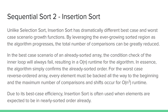For the worst case, when all of the elements are in reverse order, every element must be backed up all the way through to the beginning, and the maximum number of comparisons and shifts still occurs. So the worst case and average case of insertion sort is still O(n²). However, due to its phenomenally efficient best case performance and best-in-class average performance, insertion sort is often used for sorting relatively small collections and can be used to help maintain even a larger collection in sorted order.